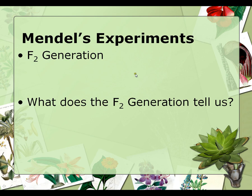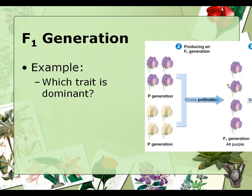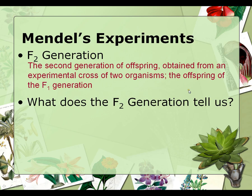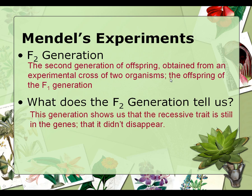He took the F1 generation and self-pollinated them, and the seeds that resulted are the F2 generation. The F2 generation tells us that a recessive trait is still in the genes — that it really didn't disappear, that it's not gone.